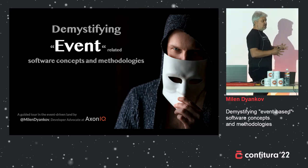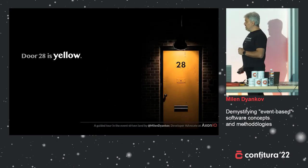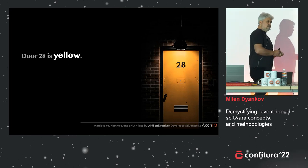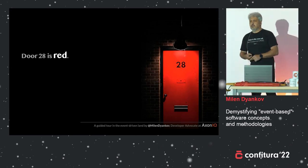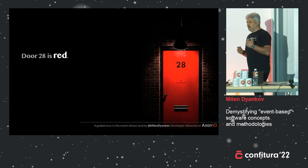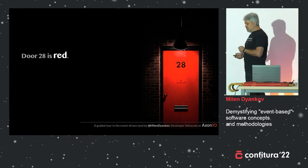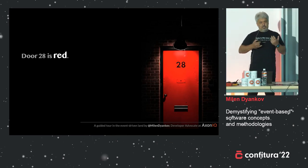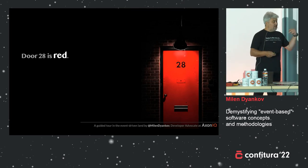This is where this talk originates from. It's a journey through the event-driven land, and as with every journey, we'll start it at the door. What you have here is a door. It has an ID — it's 28 — and it has a property of color, which is yellow. Wait, it's red. Okay, something happened here. Notice the change: I said yellow. What happened here? Obviously something changed, and the state of the object changed.